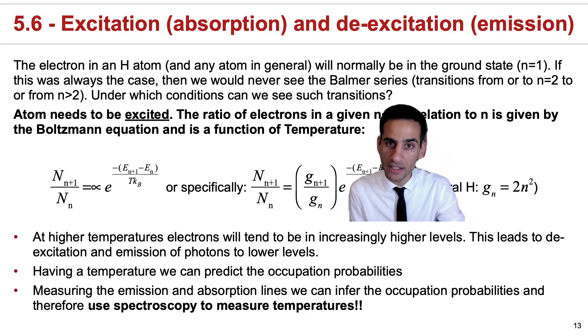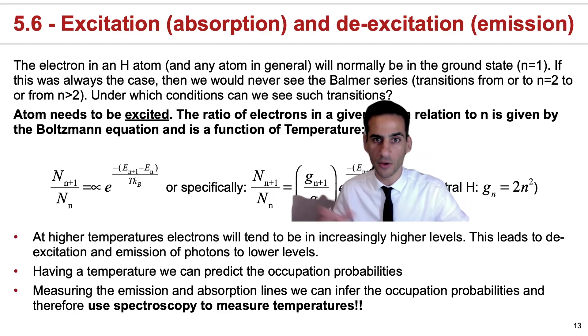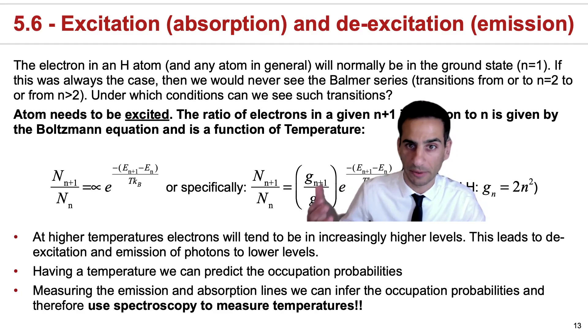Of course, it also means, and this is crucial, that if we know the temperature, we can predict the occupation probabilities. And we can also revert this, essentially, if we measure the emission and absorption lines that tell us something about this ratio. Then, if we know the atom we're looking at, we can actually infer the temperature through spectroscopy.